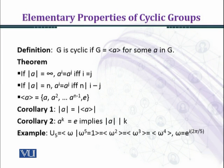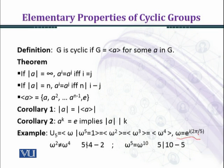In this way we can generate U5 by omega^2. Similarly, omega^3 and omega^4 are also generators of U5. Here omega is given as e^(i·2π/5). We can verify: omega^2 is not equal to omega^4, and applying the theorem, five does not divide four minus two, which confirms omega^2 ≠ omega^4.